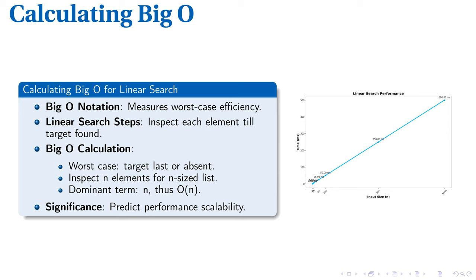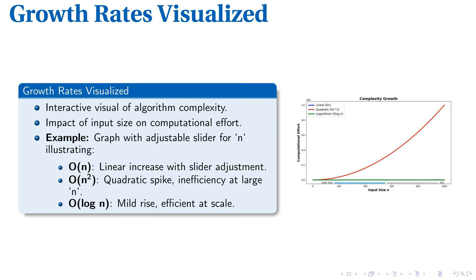This pivotal understanding of Big O notation helps us predict an algorithm's performance scalability. Specifically for our linear search example, the O(N) categorization indicates a linear increase in execution time relative to the size of the dataset. Growth rates play a crucial role in understanding the intricacies of algorithms. Picture an interactive graph with an adjustable N value reflecting input size — shifting N alters the graph shape, providing a vivid depiction of how algorithm efficiency varies with input size.